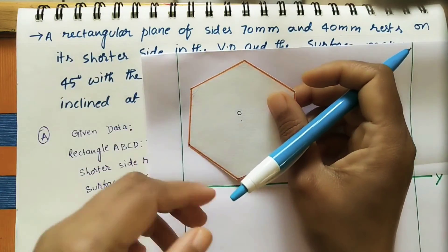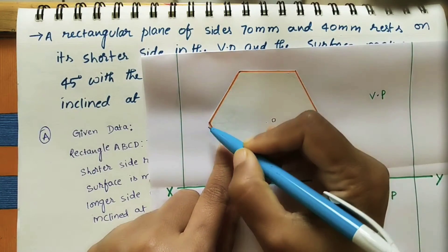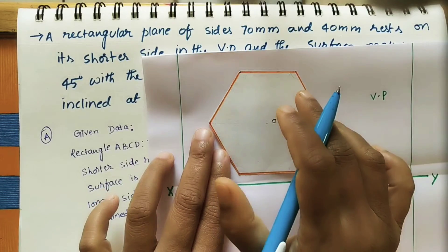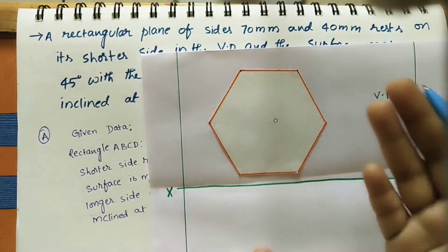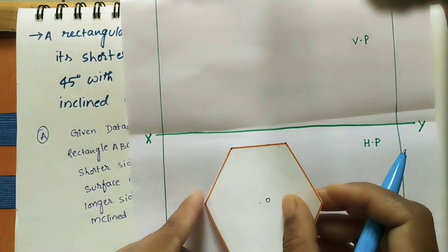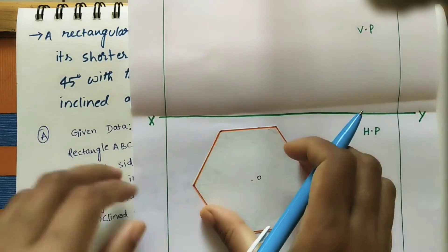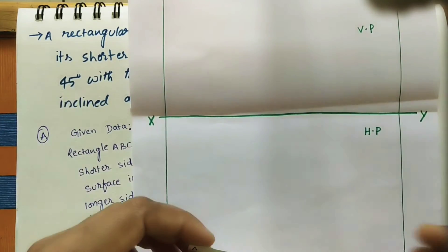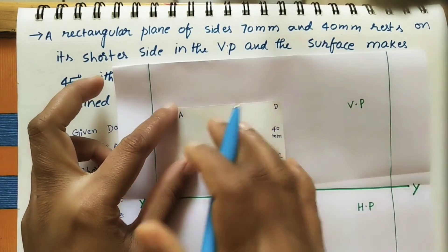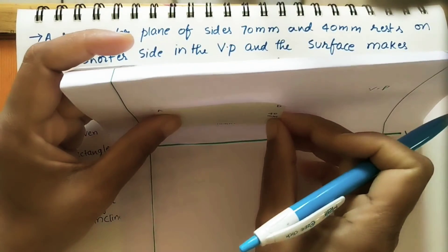If the question states that one corner of the hexagon is in the VP, the hexagon should start with that corner. Likewise, if one corner is in the HP, place the entire polygon in the horizontal plane. According to our given data, the shorter side is in the VP, so we assume the entire plane is in the VP starting with the shorter side.